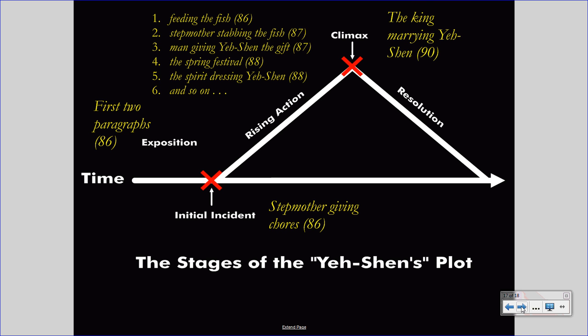The marriage of the king to Yeh-Shen ends the conflict because the stepmother can no longer try to prevent Yeh-Shen's happiness, and Yeh-Shen will be happy. She will live in comfort, and she will live in freedom, and the stepmother can no longer harm her. The marriage is the climax because it is the event that ends this conflict. No longer will the stepmother be able to have her way.